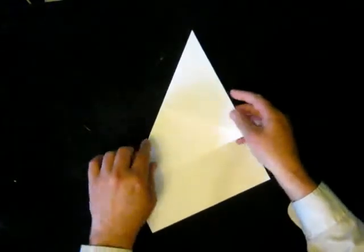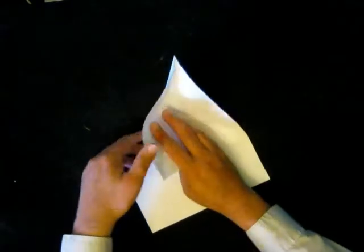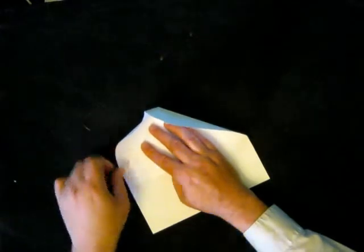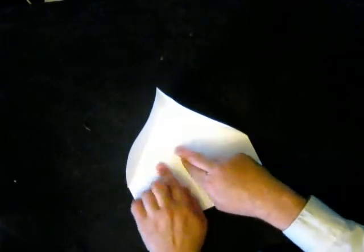Then to make a preliminary base, I'm going to take this side up and, a lot like a book, I'm going to turn it over so those two points go together, and then I'm going to put a crease down the center there.